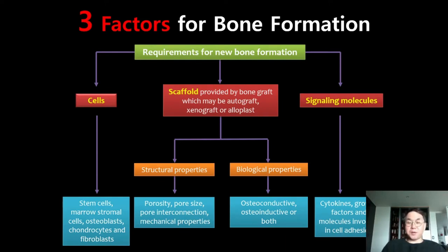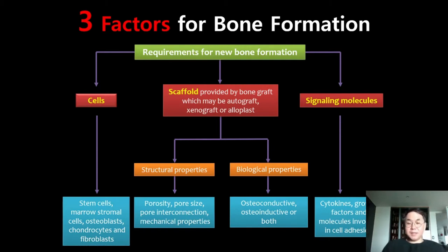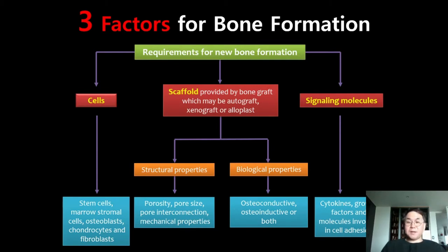We should also consider biological properties of graft material. Autogenous or allogenic bone can have some osteoinductive properties, but most graft materials have only osteoconduction. To stimulate bone-forming cells — osteoblasts and osteoclasts — we need signaling molecules. Cytokines and growth factors are very important signaling molecules, and I will talk about these in detail.